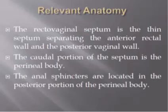The rectovaginal fistula is defined by the thin septum separating the anterior rectal wall and the posterior vaginal wall. The caudal portion of the septum is the perineal body. The sphincters are located in the posterior portion of the perineal body.